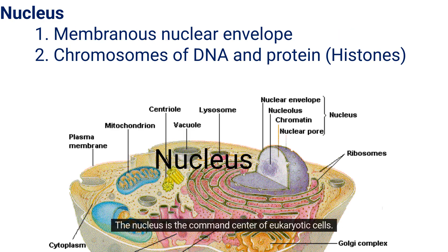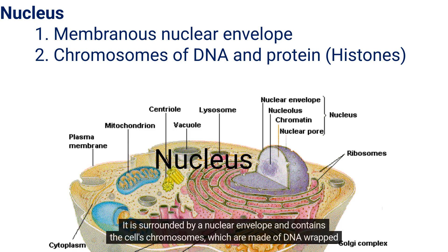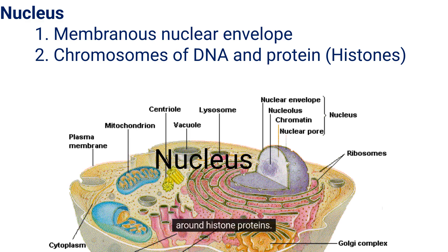The nucleus is the command center of eukaryotic cells. It is surrounded by a nuclear envelope and contains the cell's chromosomes, which are made of DNA wrapped around histone proteins. The nucleus controls gene expression and cell activity.